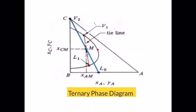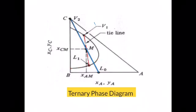In this equilibrium curve, you have two layers. One part is called the extract layer and the other part is the raffinate layer. These two layers are separated by a single point called the plait point, which lies between the extract layer and the raffinate layer.